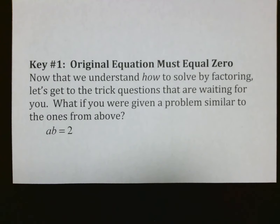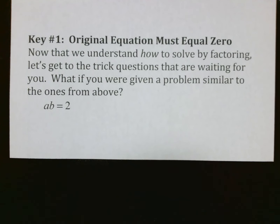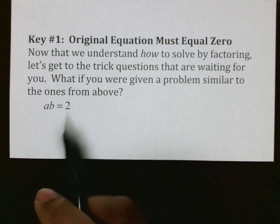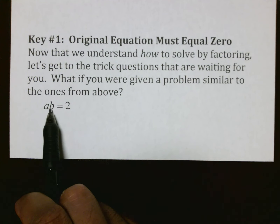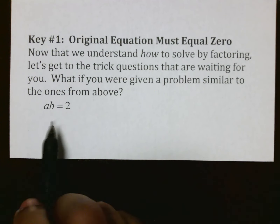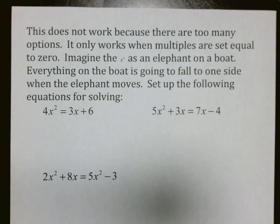Without killing all your time, let me give you some key things to remember. Number one: the original equation must equal 0. If you're given something like A times B equals 2, A could be 1 and B could be 2, or A could be 4 and B could be one half — there are too many options. It only works when the product is set equal to 0, because any other number gives too many combinations.